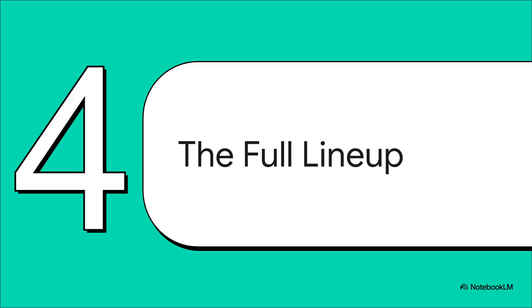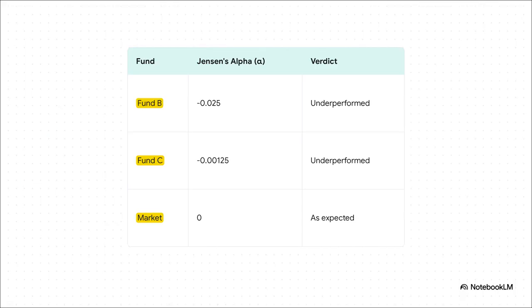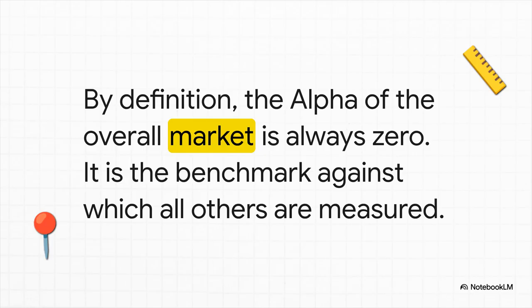We've cracked the case on Fund A. Now let's bring in the rest of the lineup. We're going to run the same analysis for Fund B and Fund C and see how they compare. When we run the numbers, a totally different story pops up. Both Fund B and Fund C actually have a negative alpha. Once you account for the risk they took, they failed — they didn't even deliver the returns they were supposed to. They underperformed. And take a look at the market's alpha: it's zero. That makes perfect sense — the market is our benchmark, it can't beat itself and it can't lose to itself. It's the baseline that everything else is measured against.